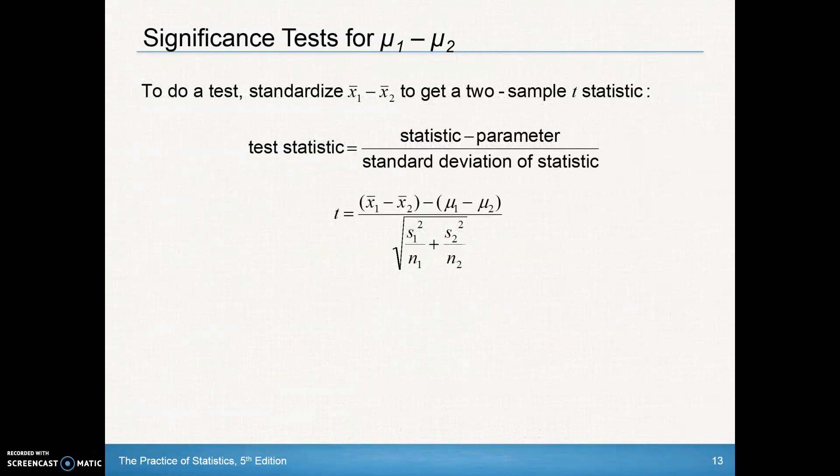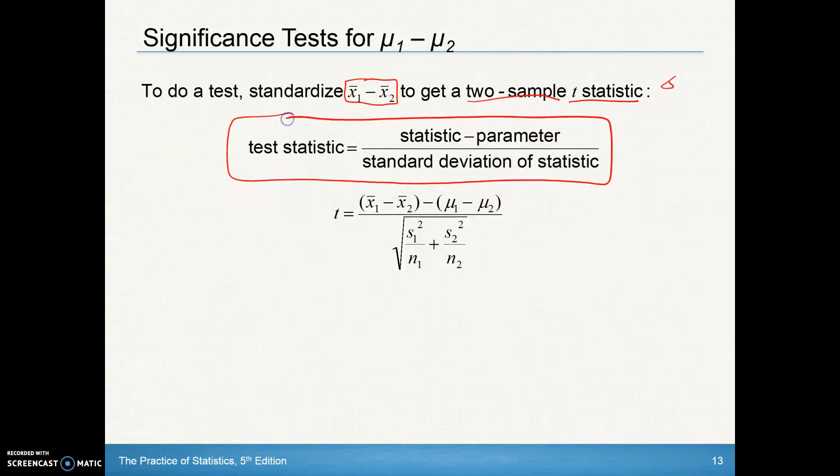To do a test, we need to standardize the difference in the sample means to get a two-sample t statistic. We'll do a t statistic because we rarely, if ever, know what our population standard deviation is. As always, if we're doing any type of test statistic, it's always your statistic.